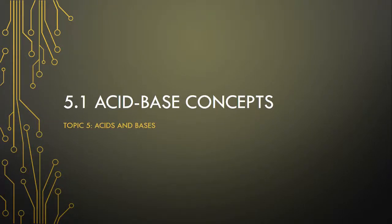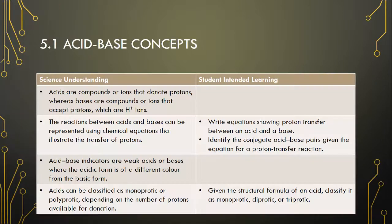All right, welcome to acid-base concepts video part 5. In this video I would like to talk about the last row of the concept chart. Acids can be classified as monoprotic or polyprotic depending on the number of protons available for donation. What you need to be able to do after this is, given the structure or formula of an acid, classify the acid as monoprotic, diprotic, or triprotic.